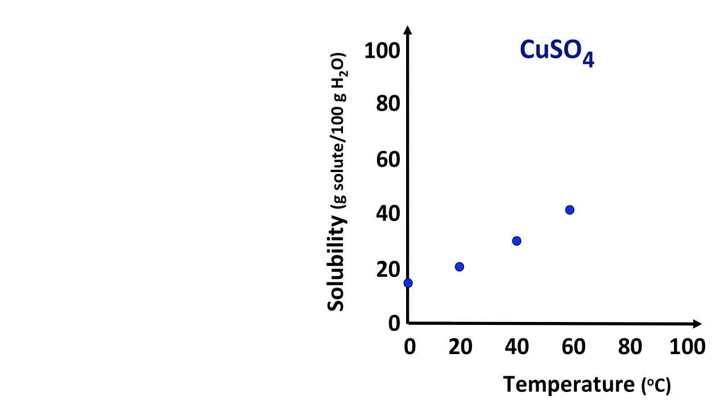At 60 degrees Celsius, you can get slightly more than 40 grams to dissolve. At 80 degrees Celsius, you can get a little under 60 grams of copper sulfate to dissolve. And at 100 degrees Celsius, you can get just barely more than 80 grams of copper sulfate to dissolve in 100 grams of water. And there is the relationship shown graphically between temperature and solubility.